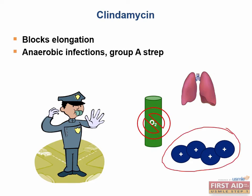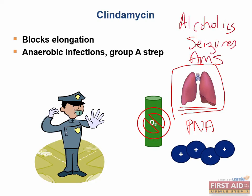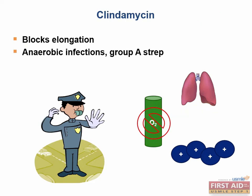Most importantly, clindamycin treats anaerobic infections above the diaphragm, particularly anaerobic bacterial pneumonia. Anaerobic bacteria typically reside in the oral cavity, and if they travel into the trachea and then the lungs they can cause severe anaerobic pneumonia. Alcoholics, seizure patients, and those with altered mental status are predisposed to inhalation of oral anaerobic bacteria. Clindamycin is the treatment of choice for this type of pneumonia.